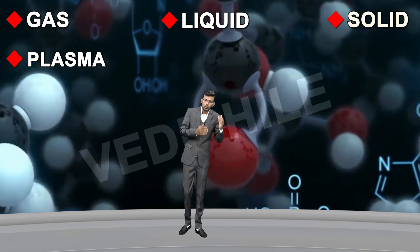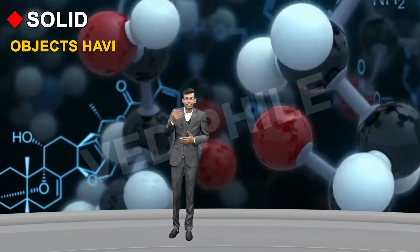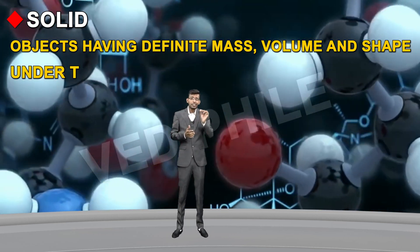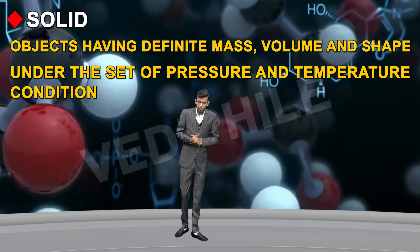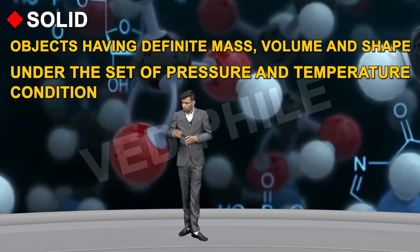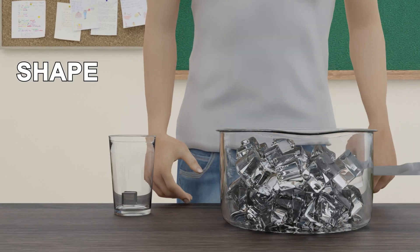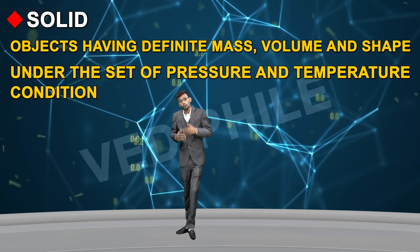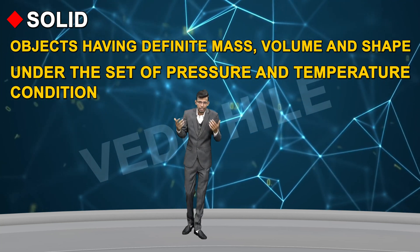We will discuss solid, liquid, and gas in detail. Solids are objects having definite mass, volume, and shape. A solid object's mass, volume, and shape remain absolutely definite under a set of pressure and temperature conditions. For example, if I take an ice cube from an ice bucket and place it in a glass, its shape and volume will not change.